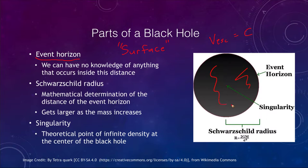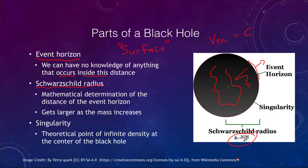The escape velocity equals c, the speed of light, meaning that inside this boundary nothing can escape. We know nothing about what is going on inside. Outside of it, light could still escape because it is traveling faster than the escape velocity at that point. In order to determine the event horizon, we can calculate what's called the Schwarzschild radius. The equation depends simply on the mass of the object — 2G and c squared are simply constants, so mass is the only thing that matters.